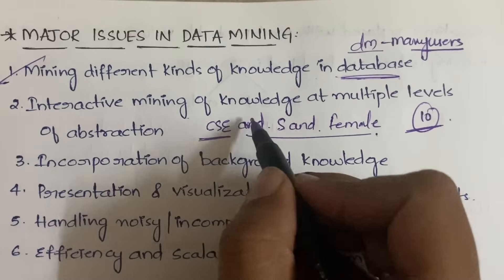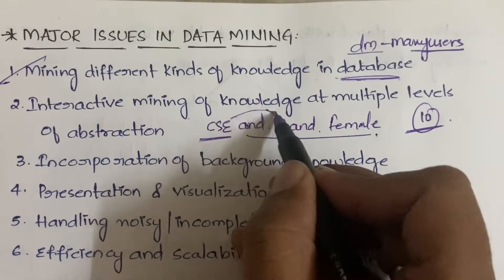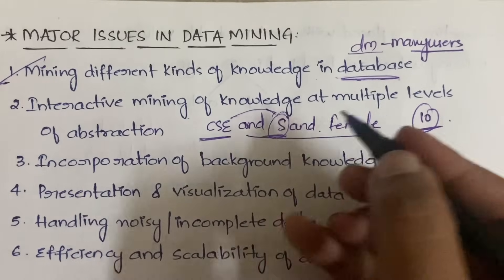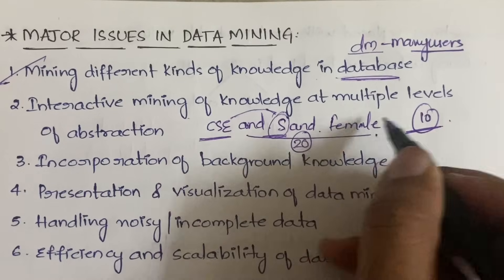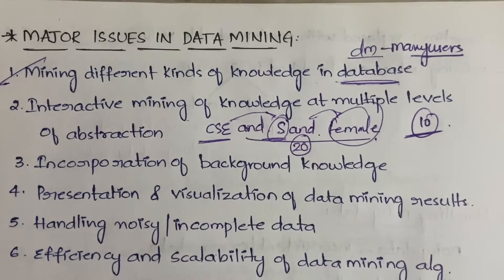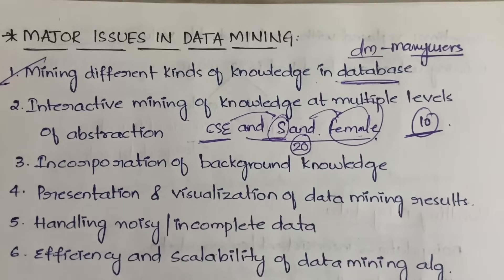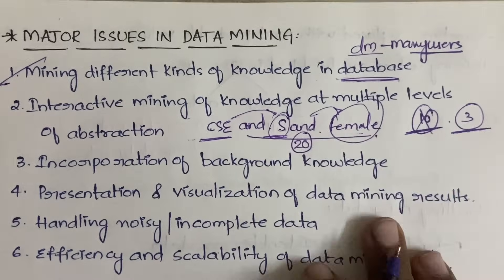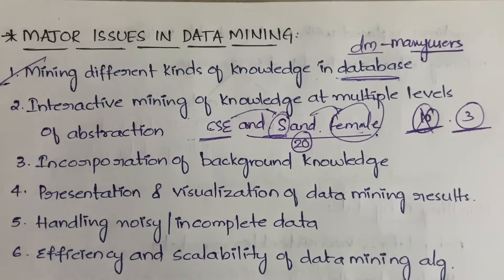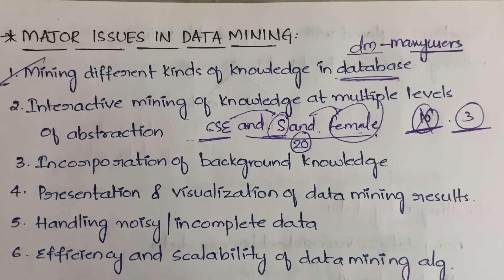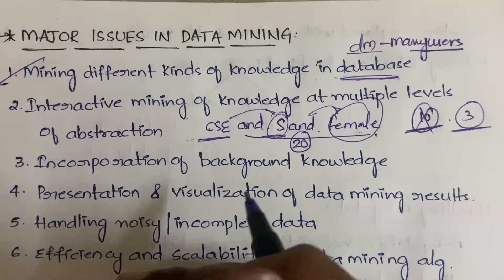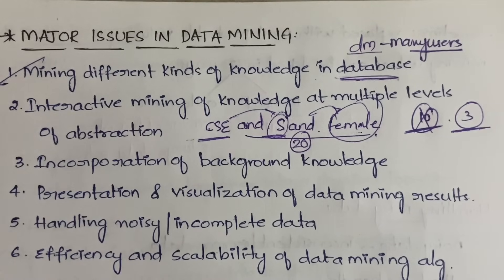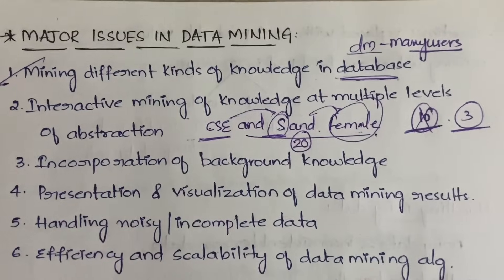So you first apply a filter for CSC, see how many records you get, then apply a filter for names starting with S. If you still get 20 results but need only 10, you then apply the female filter. If you apply all filters at once you might get only three results and not reach your target of 10. So it has to be interactive at multiple levels of abstraction, level by level.